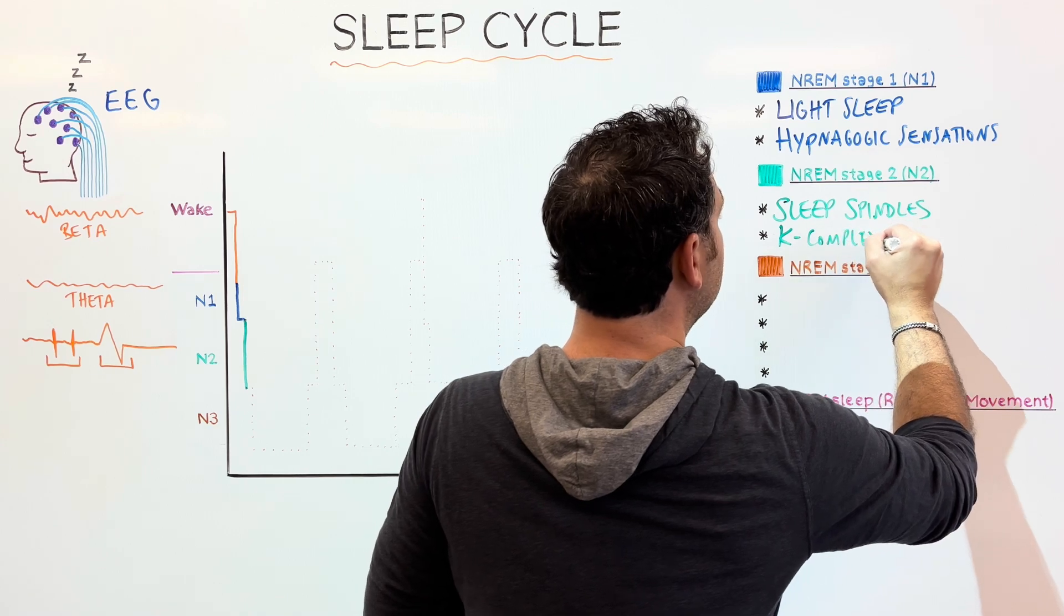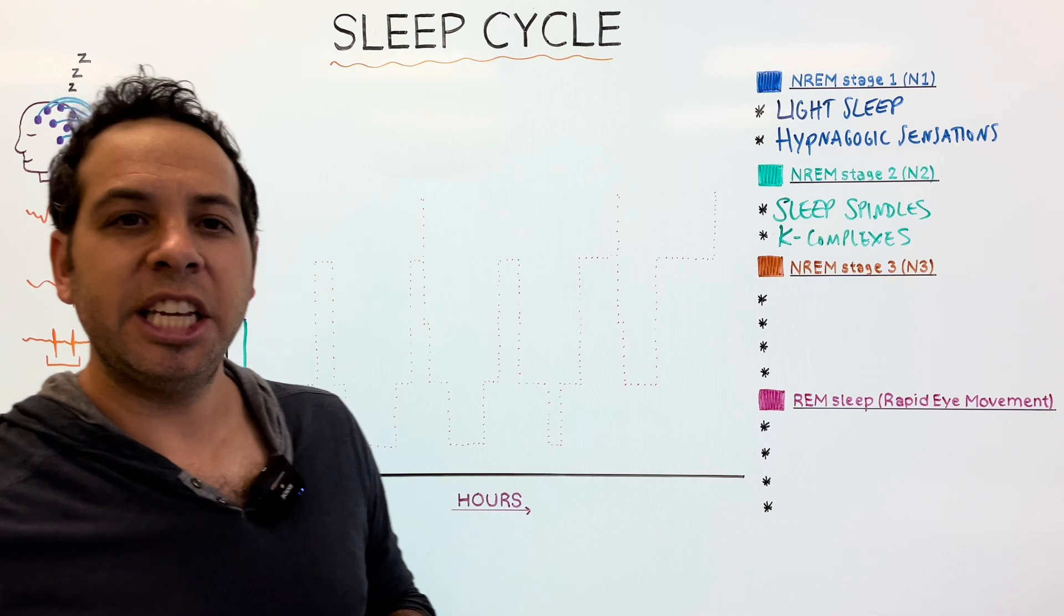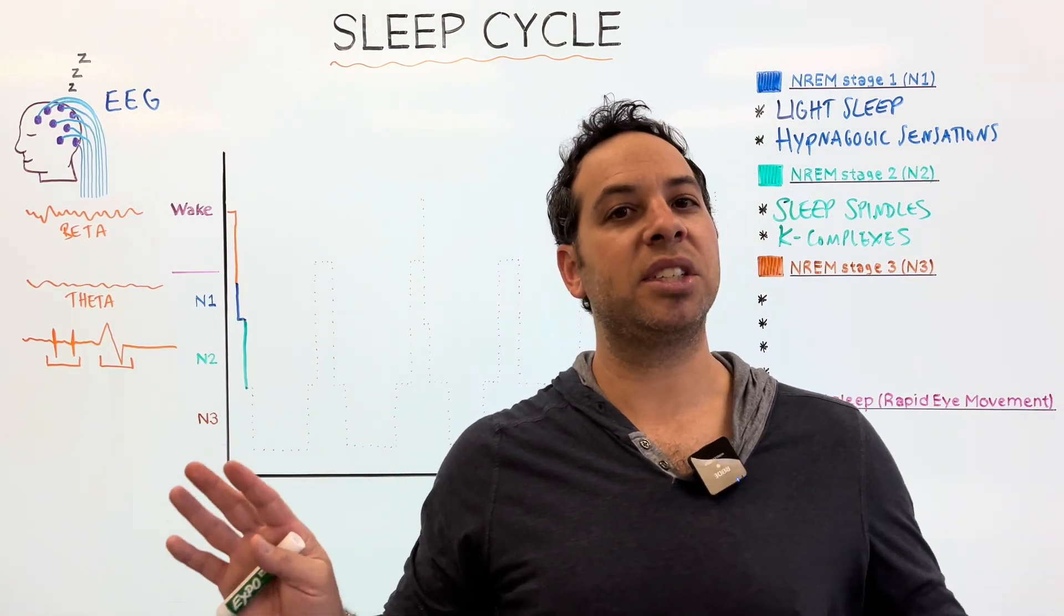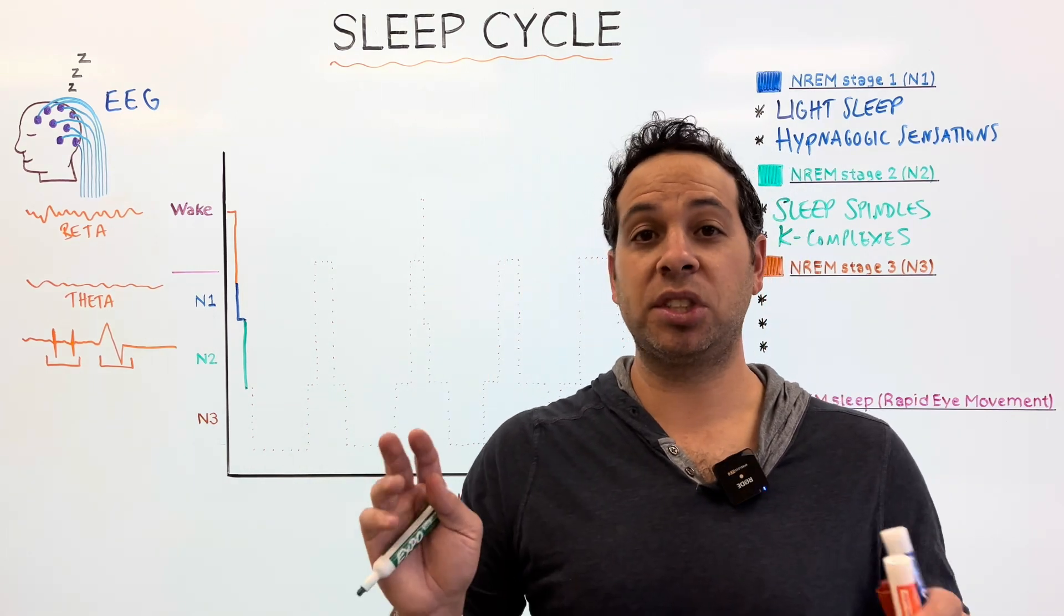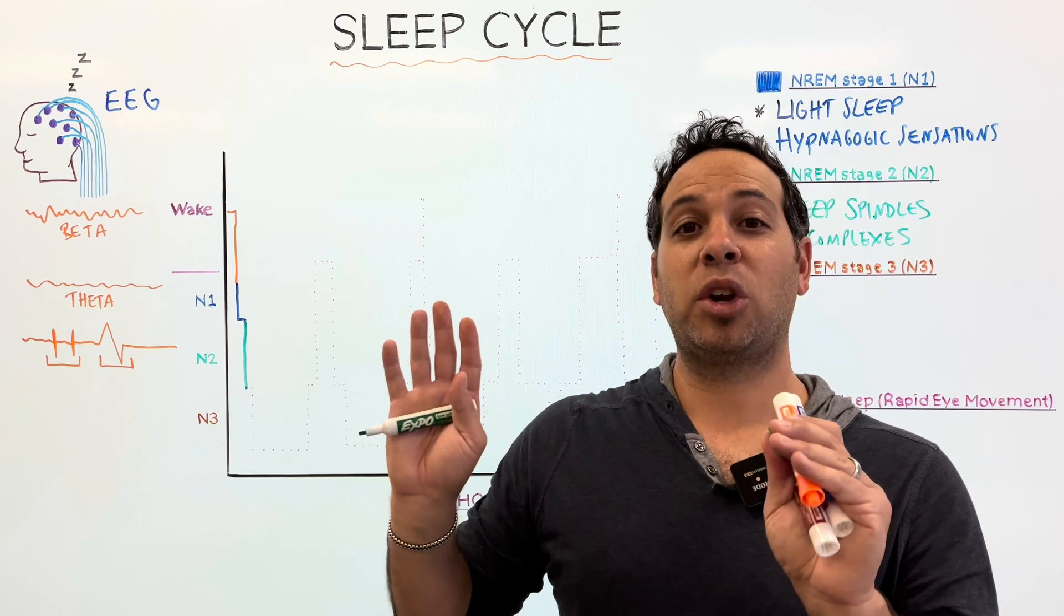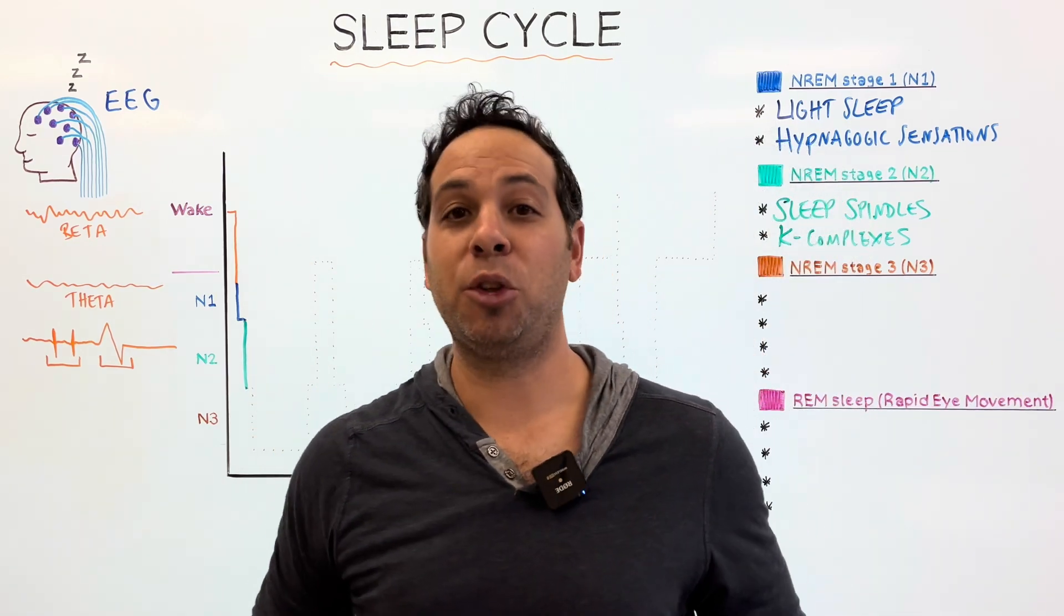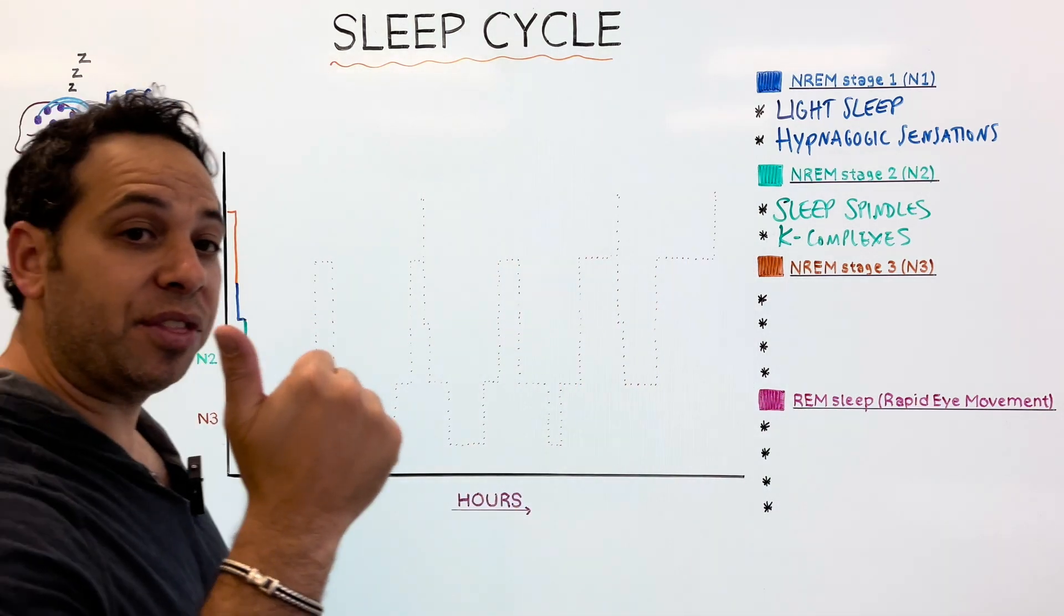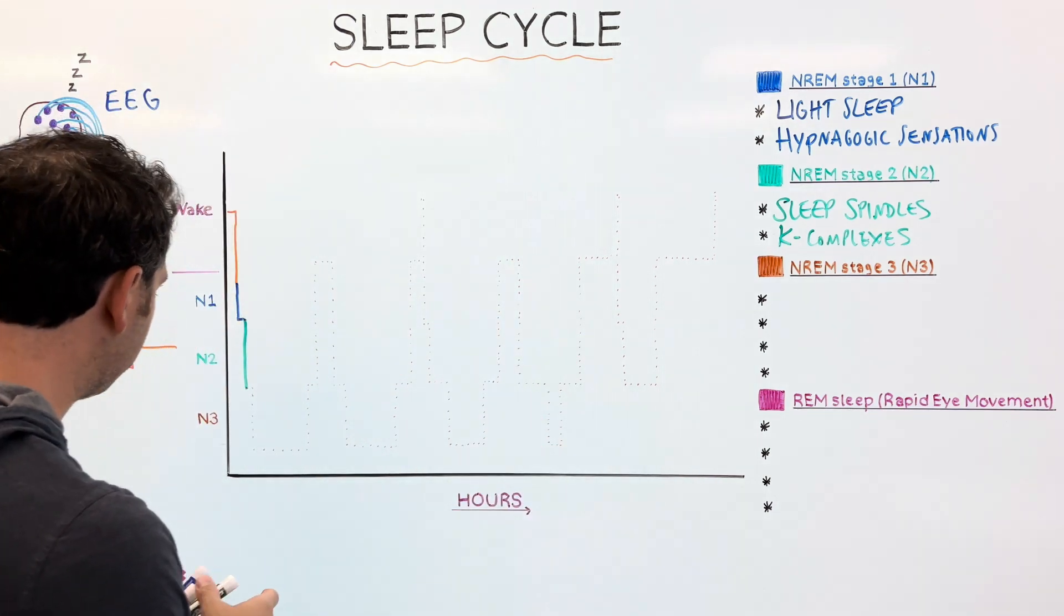And the theory is, at least one of the theories, of why these kind of bursts of activity occur is because you have all this stimuli coming in when you're sleeping. Sights and sounds. But your brain is asleep. And so, your RAS, reticular activating system, and your thalamus are trying to block out all this information to keep you asleep. So maybe that's why those bursts of activity occur. How do I know I've entered stage two? I have theta waves with brief bursts, sleep spindles, and K-complexes.